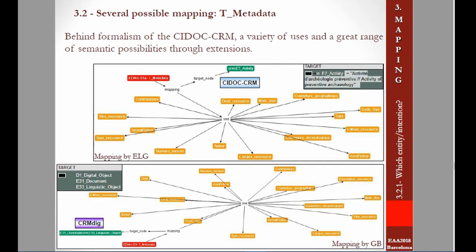The most difficult aspect was the choice of the first entity as input. Behind the formalism of CIDOC-CRM, there is a variety of users and of semantic possibilities through extensions. For the mapping of the metadata table, I referred to the entity E7 Activity, since metadata are related to preventive archaeological activity. However, some fields characterize the technical support itself — that is to say, the database. George Bruce Kerr, working with the CRM-Dig extension, uses it as input and chooses the entity D1 Digital Object. We both arrive at a valid result. Therefore, we wondered about the relevance of different mappings that are possible to produce and about the important role of choosing the first entity.